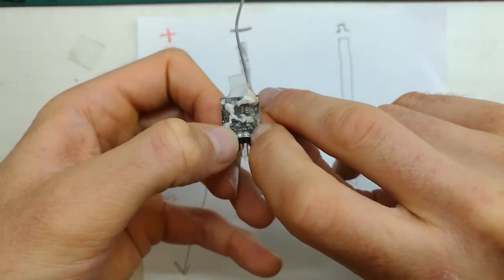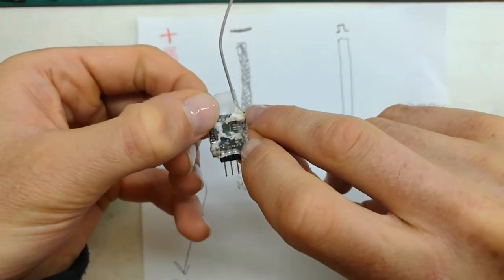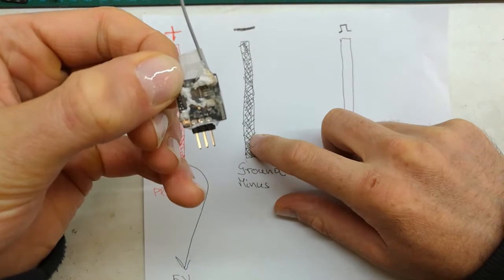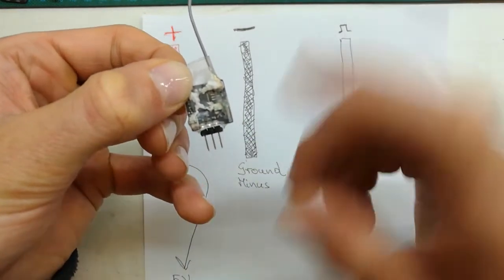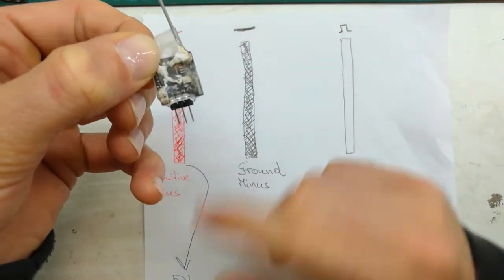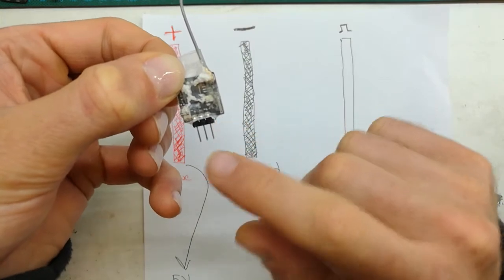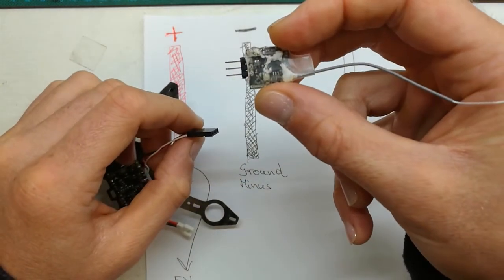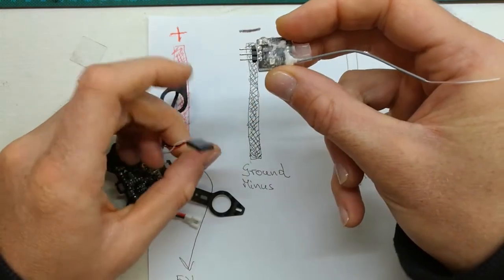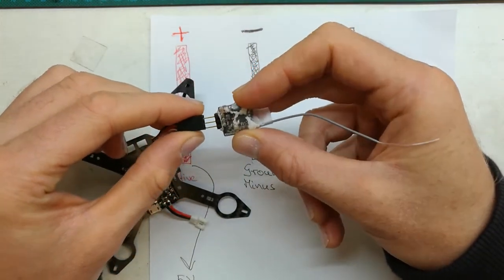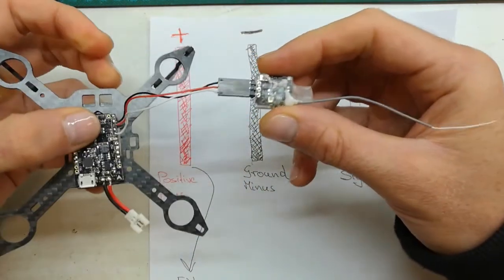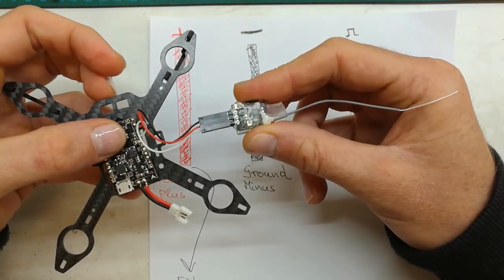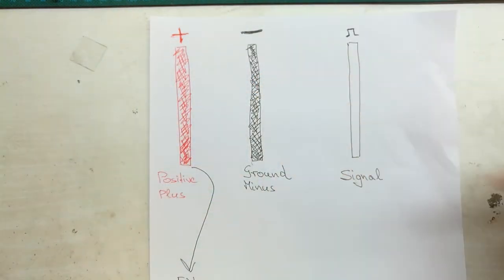If I turn it around I'll see a sign of signal here and there's a sign of minus here. So we know that signal is white, minus is the black wire. The middle one has no sign of plus, but using common sense we know that the middle one is positive because it's left for positive. White, red, black: signal, positive, ground. White, red, black. The wires are hooked in the right order.